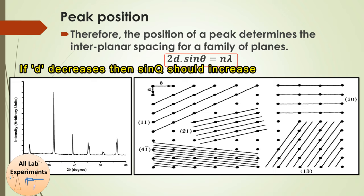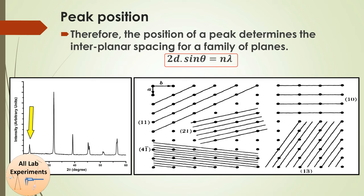This is the reason why we get different peaks at different positions. A peak at a lower angle corresponds to the maximum interplanar spacing, like the (1,0) plane. As interplanar spacing decreases, we observe peaks at higher angles. So the kind of plane responsible for a particular peak decides the peak position.